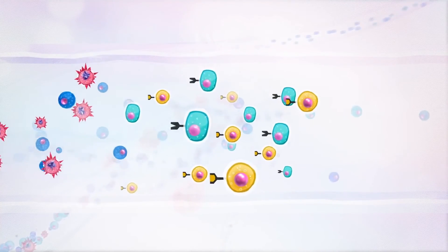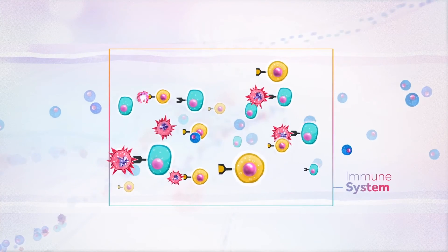Luckily, our immune system is made of different types of cells that are able to fight and eliminate these naturally occurring cancer cells.